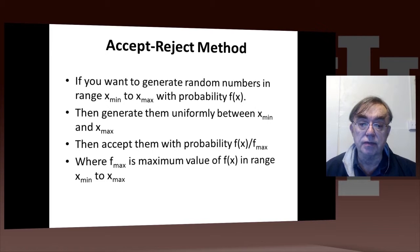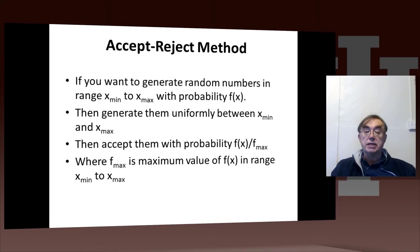When you want to generate random numbers in a certain range. Here, Xmin is 110 and Xmax is 140. We have a range from 110 to 140 with some probability distribution.